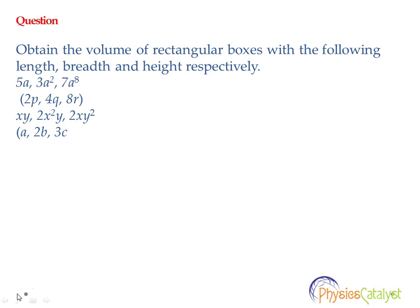Question number 1: Obtain the volume of a rectangular box with the following length, breadth and height respectively. The first one is 5a, 3a squared, 7a to the power 8. The second one is 2p, 4q, 8r. The third one is xy, 2x squared y, 2xy squared. The last one is a, 2b, 3c.